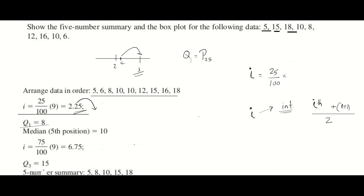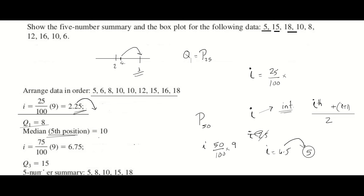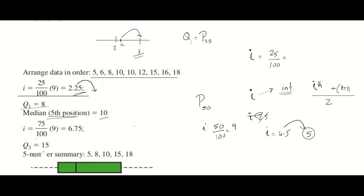When i is a decimal, you take the integer just bigger than it. Since 2.25 falls between 2 and 3, the integer bigger than 2.25 is 3. So Q1 is equal to the value in the third position, which is 8. For the median (50th percentile), calculate 50 by 100 into 9, which gives 4.5. Since it's a decimal, take the next integer: 5. So the median is the value in the fifth position, which is 10.